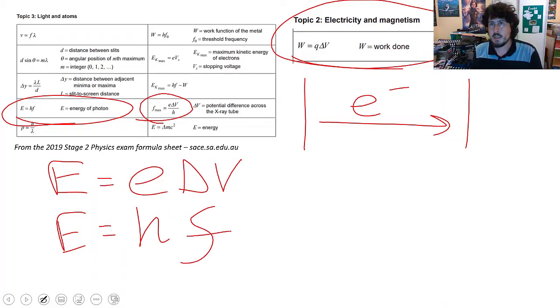Now, in making the assumption that all of the energy, all of the kinetic energy of the electron is transferred to the photon itself, this E is going to equal the other E. So you can now smash these formulas together.